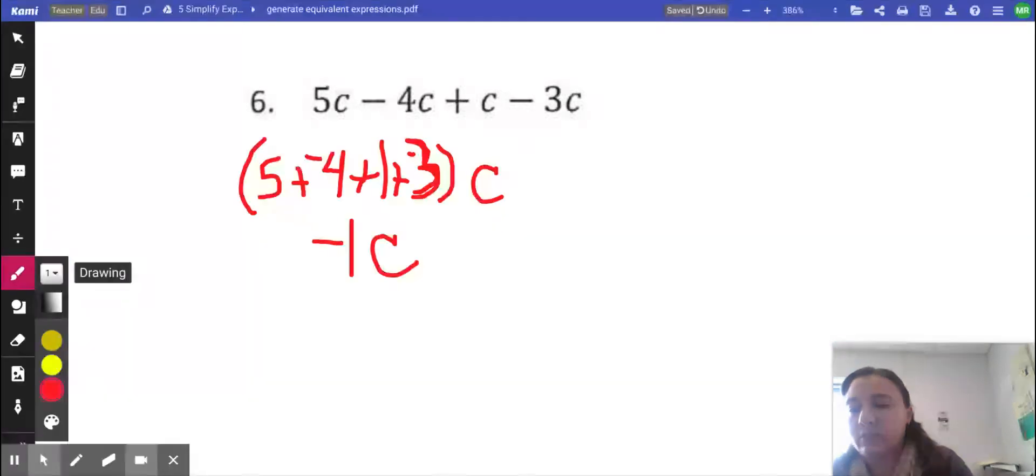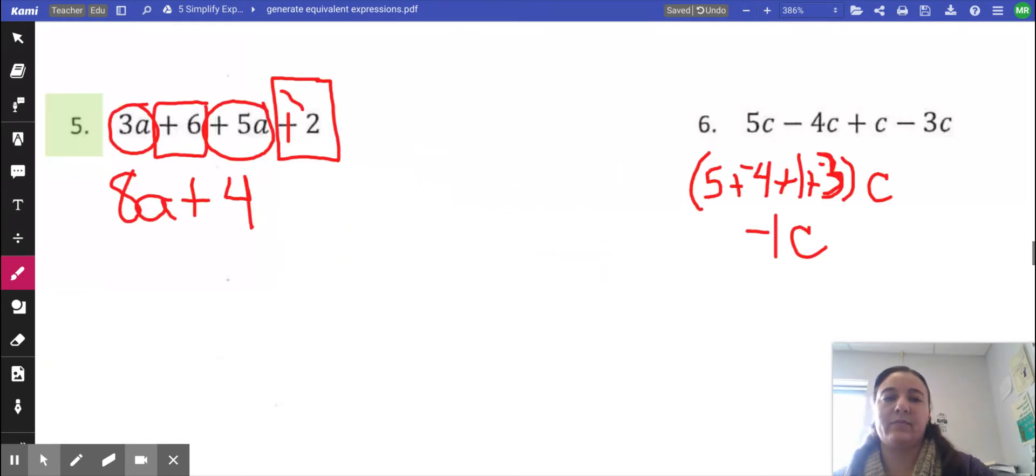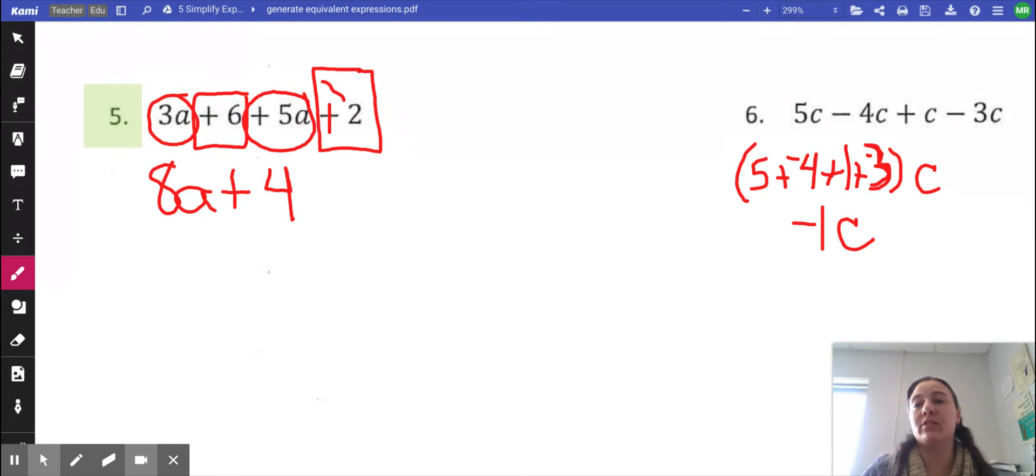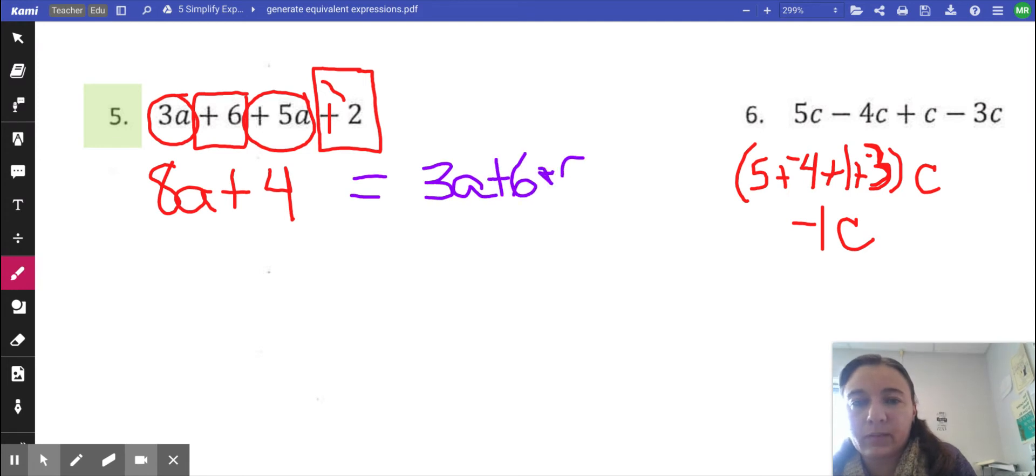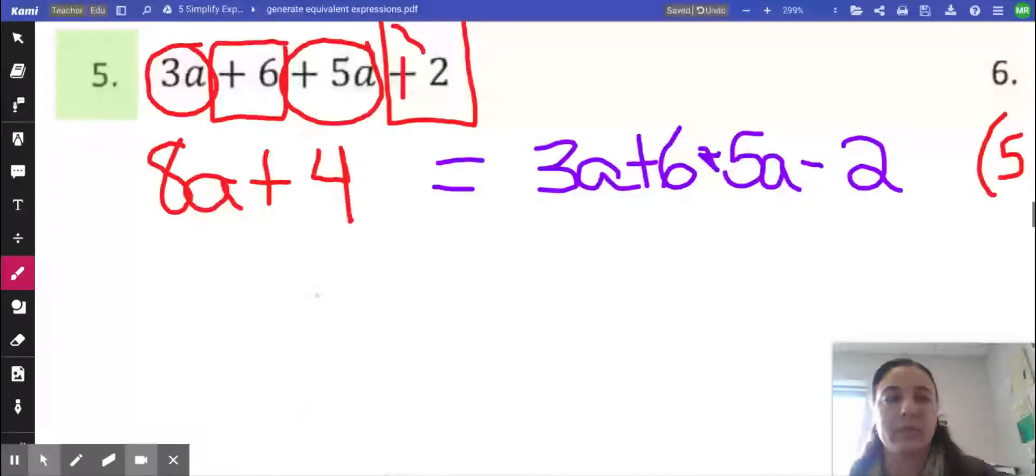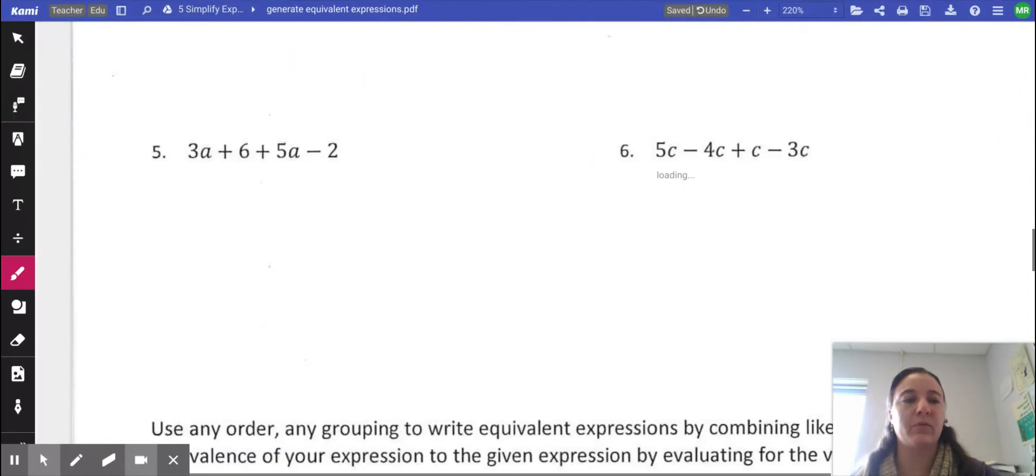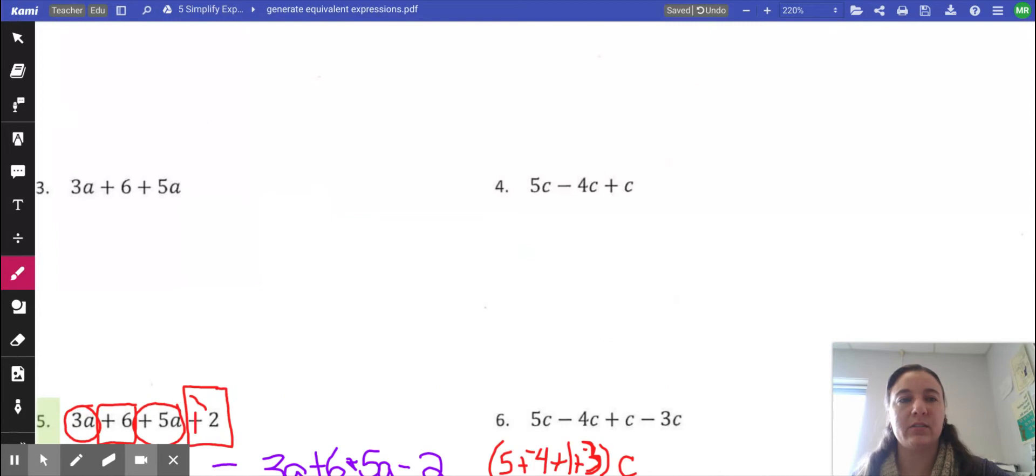Now I am going to show you how to cheat. Let's say you didn't understand any of that. And it's a multiple choice question. And the question says, which expression is equivalent to three a plus six plus five a minus two. And so what you would do is you would take your question.